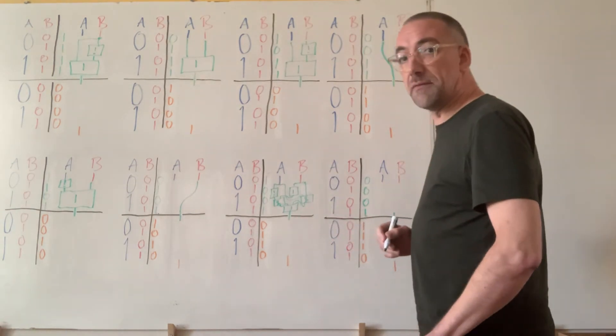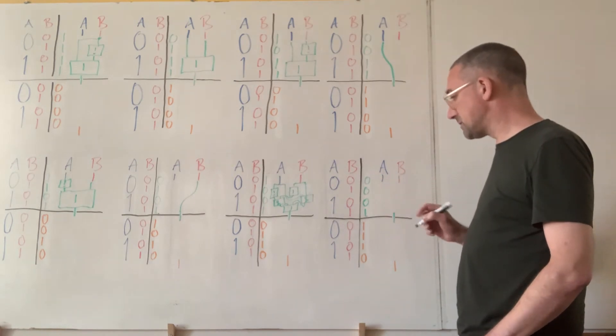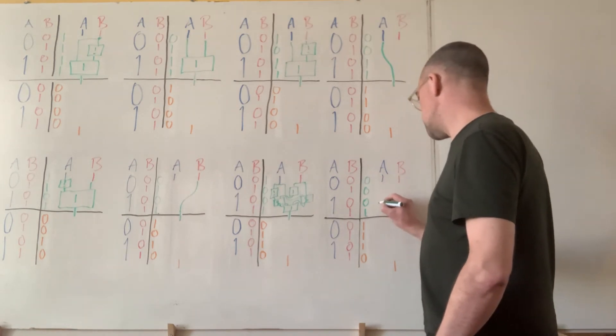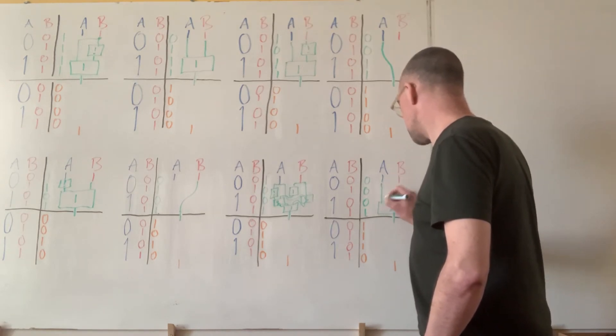Okay. And finally for the green circuits, the ones with the green truth tables, I've got 0, 0, 0, 1 and that is recognizable as AND.